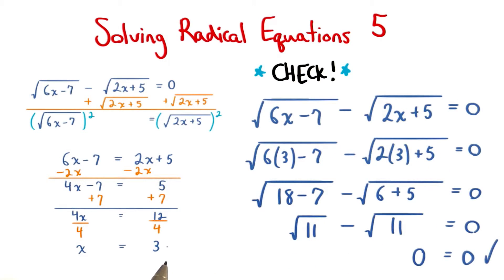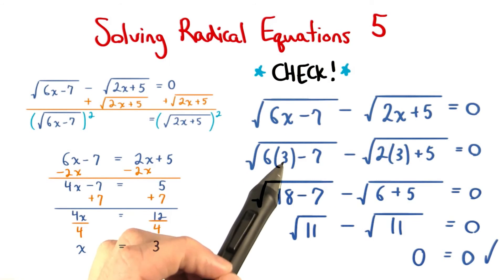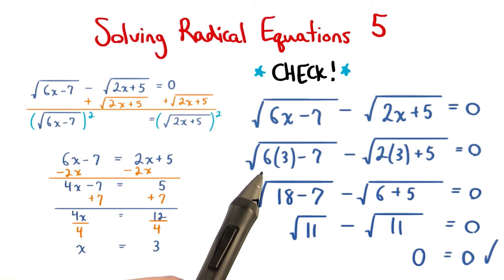To double check our result, we'll plug in x equals 3 into the original equation. When we check x equals 3, we'll get this expression on the left, which evaluates to root 11 minus root 11, which equals 0. Our answer checks, so we can use this as our solution set. X just equals positive 3.